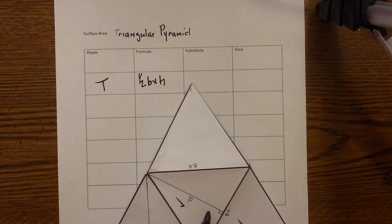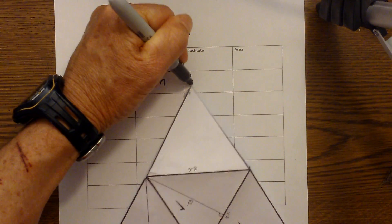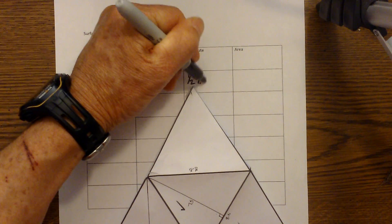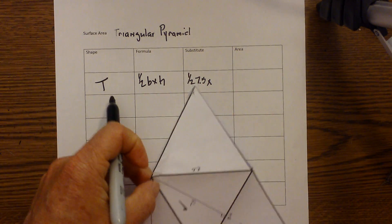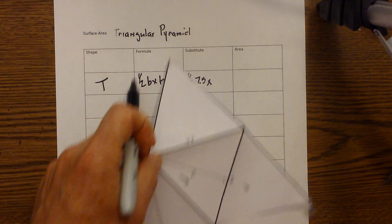For the base, the height is 7.5. It's not the height of the pyramid—it's going to be the height of the triangle, which is 7.5. So it's going to be one half times 7.5 times the base, which is 8.5.